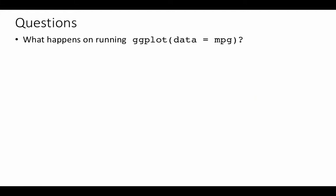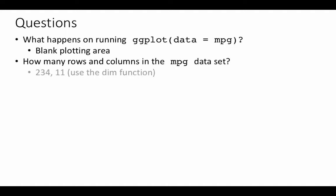As I've said, because you've not specified anything, any layer of data to plot, you'll get an empty plot. Okay, so how many rows and columns are there in the mpg data set? You can find that out by using nrow and ncol or even better, you can find it out by using the dim function.